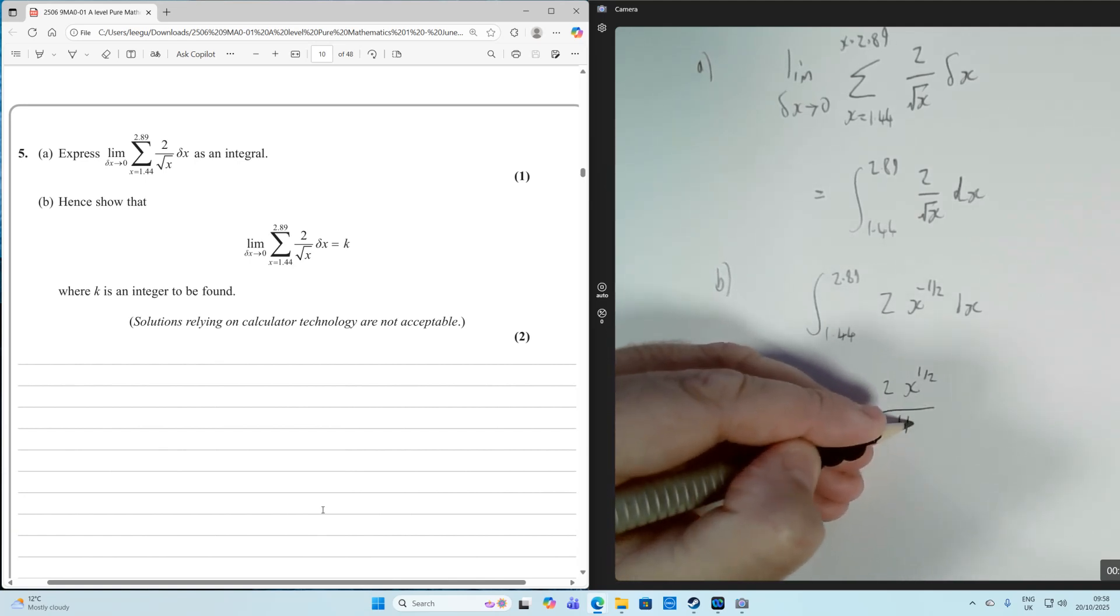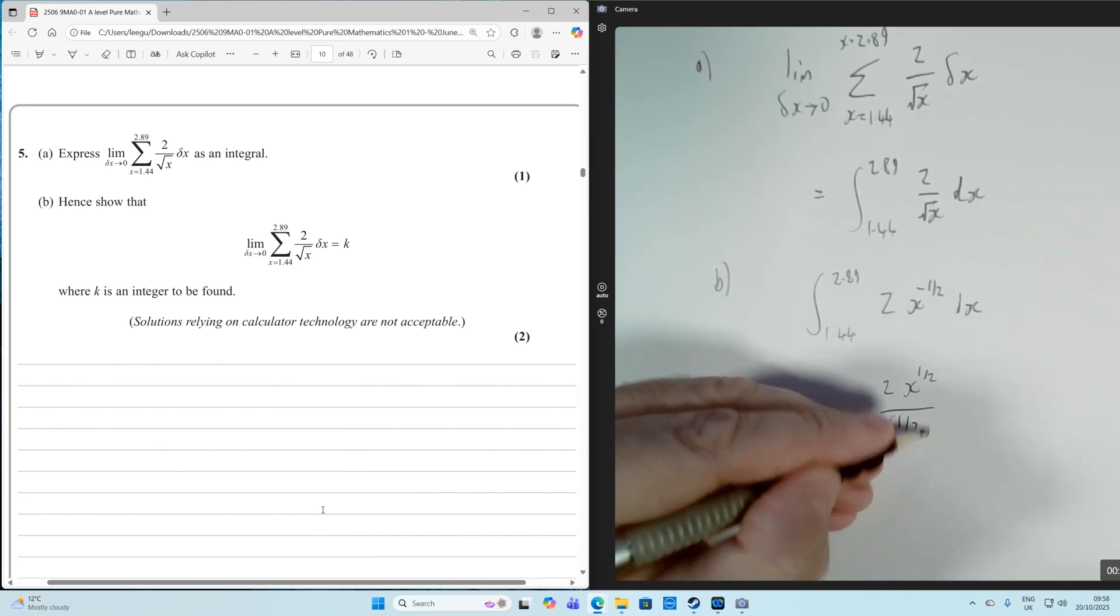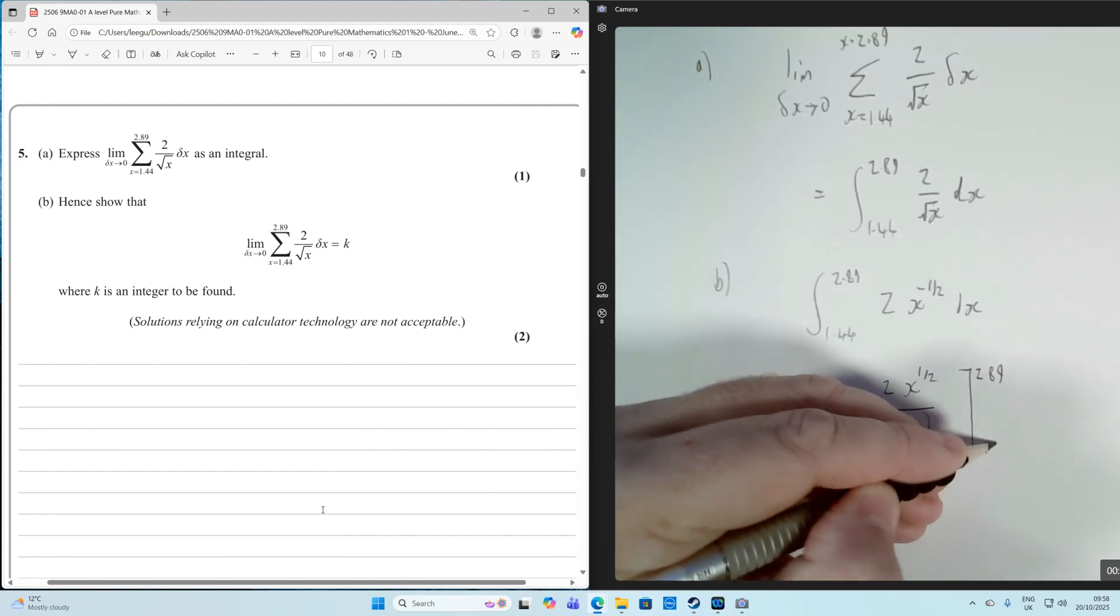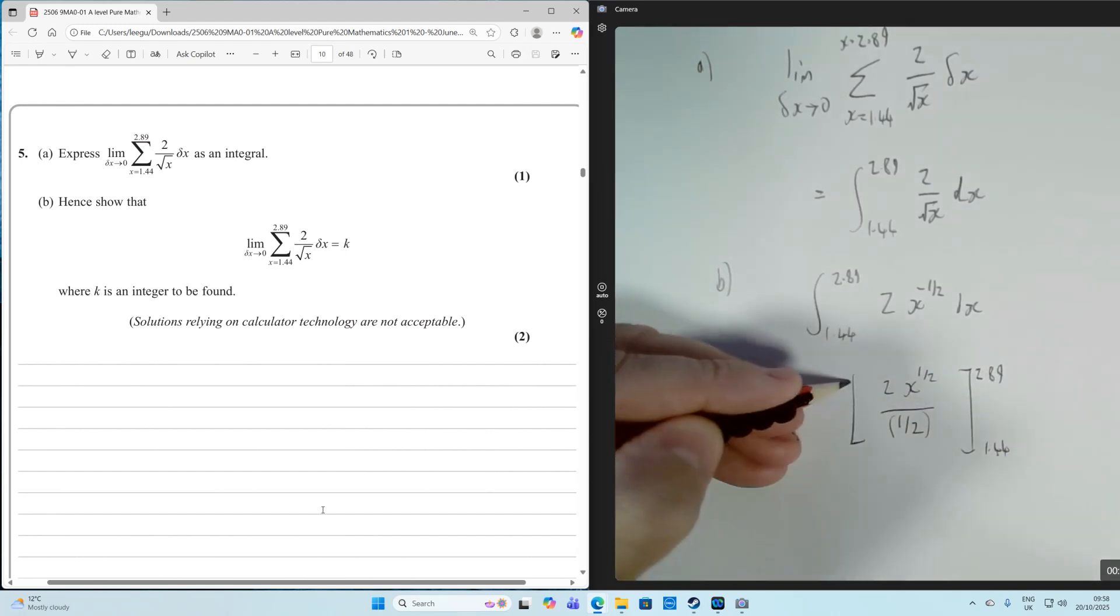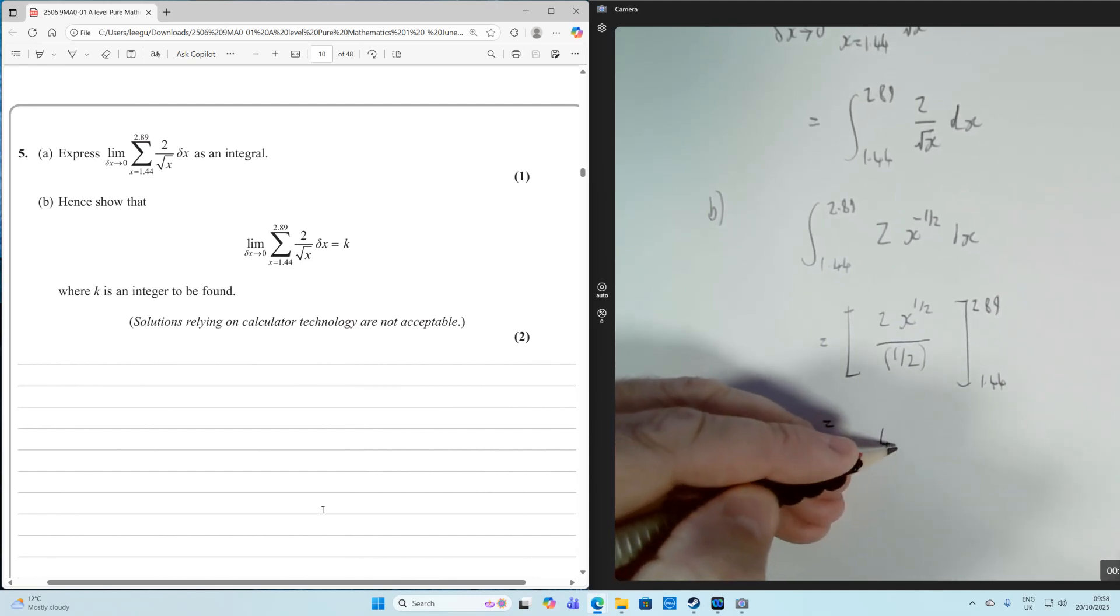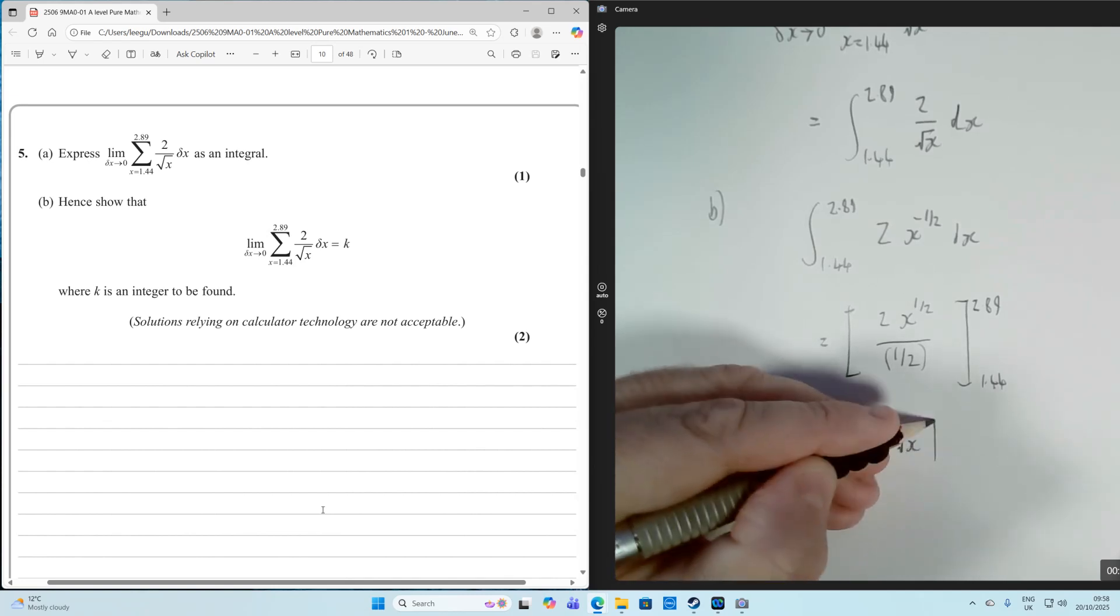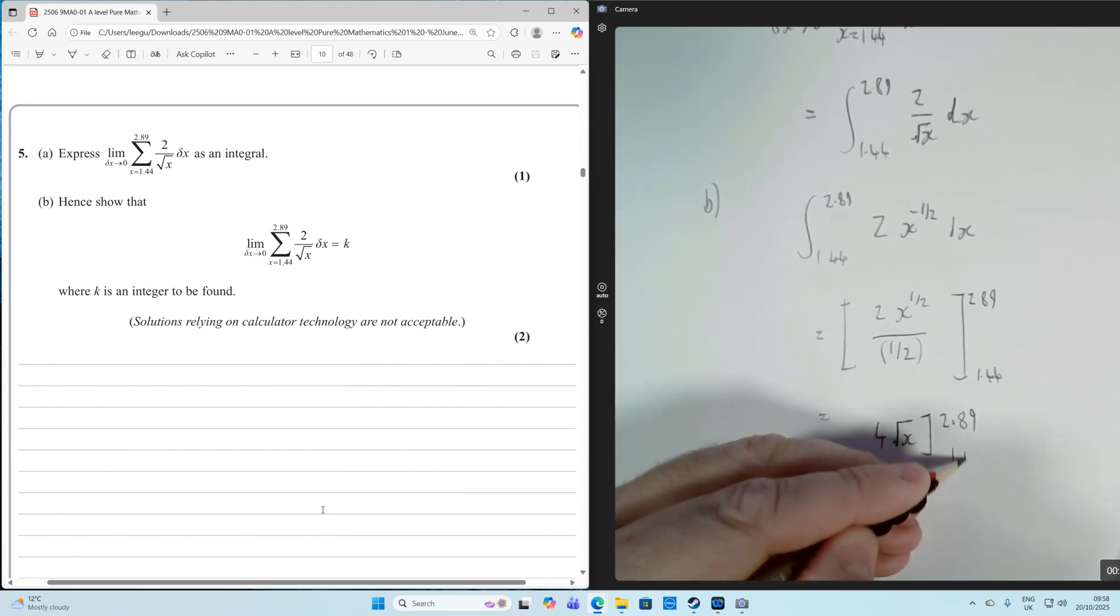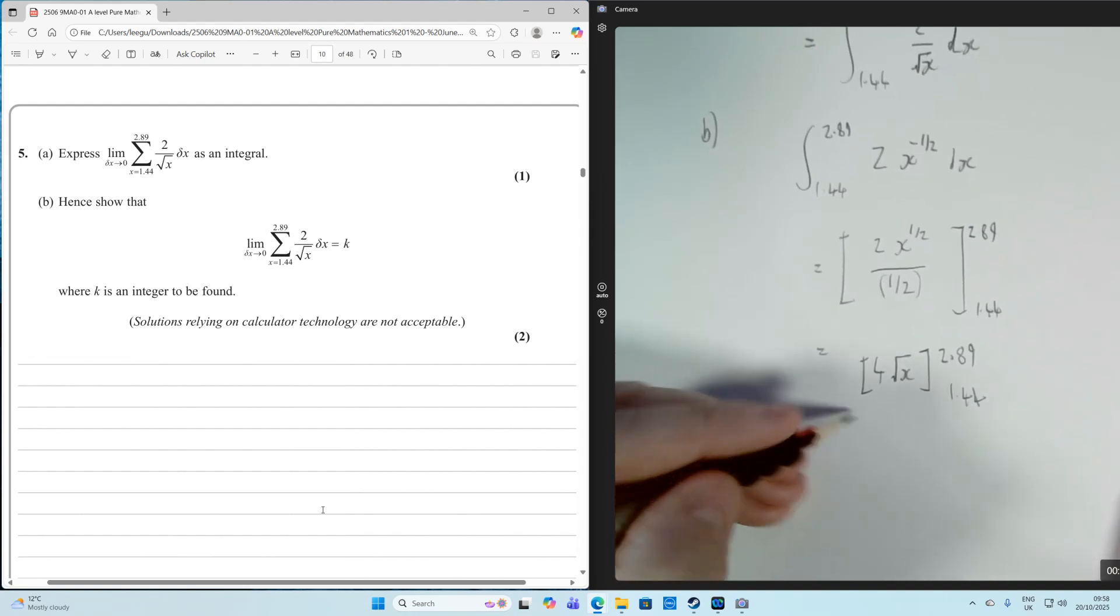We're going to divide by the new power, so we're going to divide by a half. And that's going to be between the 2.89 and the 1.44. But dividing by a half is the same as timesing by 2. So this is the same as 4 root x in between the limits of 2.89 and 1.44, like so. And then we just evaluate that.